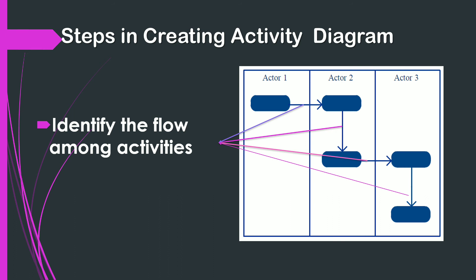The next step is to identify the flow among activities. Figure out in which order the actions are processed. Mark down the conditions that have to be met in order to carry out certain processes. Which actions occur at the same time and whether you need to add any branches in the diagram. Then, identify which actions have to be completed first before proceeding to the next one.